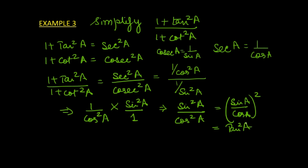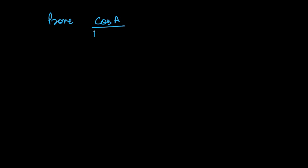That is how we simplified this trigonometric expression. Now let us do one trigonometric identity. There will be a trigonometric equation given and we have to prove the left-hand side equals the right-hand side. Prove: cosec A over (1 + sin A) + (1 + sin A) over cosec A = 2 sec A.